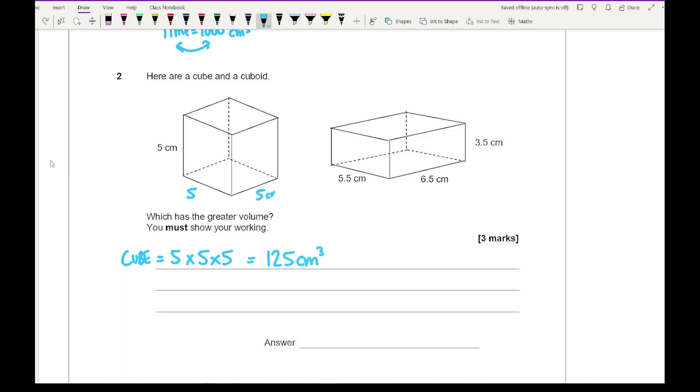And moving on to the cuboid, here we just need to multiply the length by the width by the height. So, we've got 5.5 multiplied by 6.5 multiplied by 3.5. And I think the reason why they've chosen whole numbers and decimals is purely to prevent people from guessing. That comes up to 125.125 centimetre cubed. And I'd say you would probably expect to do that on a calculator. So, looking at the two volumes, we can see which one of those is greater. It's going to be the cuboid.